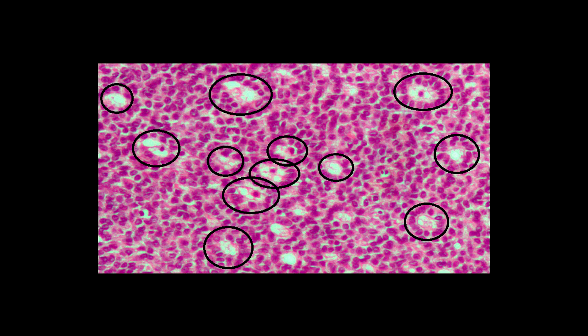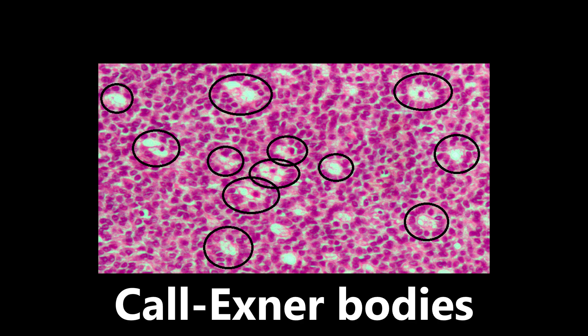Back to histology — we see a lovely circular pattern all over this slide. What we're looking at are Call-Exner bodies. These are granulosa cells arranged in a rosette or flower pattern around collections of eosinophilic fluid. This is particularly seen in granulosa cell tumors. So if you see cells arranged in a circular or rosette pattern on a histology slide, think Call-Exner bodies and granulosa cell tumor.